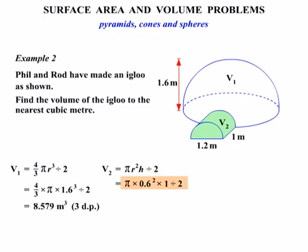So let's work this out now, put that into your calculators. Pi times 0.6 squared times 1 divided by 2, and we get 0.565 m³.